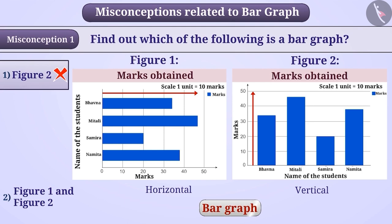The correct understanding is that in a bar graph, bars can be drawn either vertically or horizontally. Therefore, a bar graph is shown in both figures. Thus, option 2 is the correct answer.